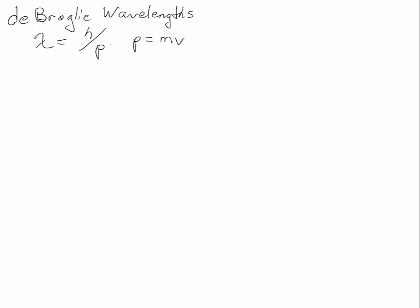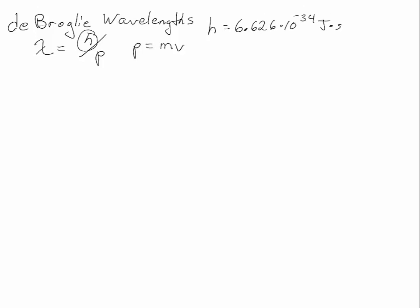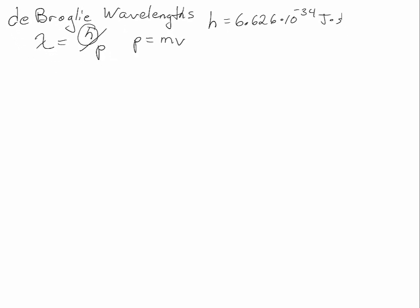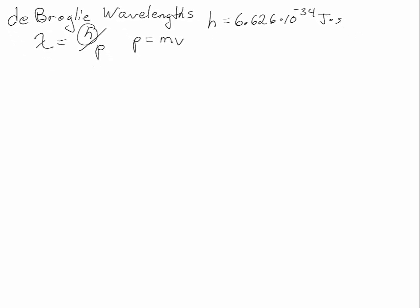Because of the units on h, because h is 6.626 times 10 to the negative 34 joules times seconds, we have to work with specific units with mass and velocity.